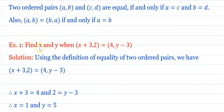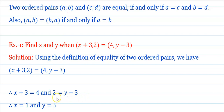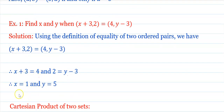Example: Find x and y if the ordered pairs (x + 3, 2) and (4, y − 3) are equal. Using the definition of equality of two ordered pairs, equating first components: x + 3 = 4, so x = 1. Equating second components: 2 = y − 3, so y = 5. We can easily find the values of x and y by using the equality of two ordered pairs.